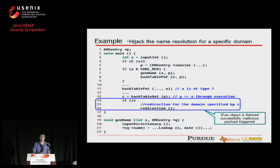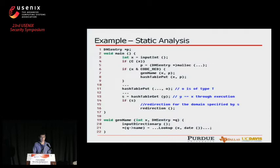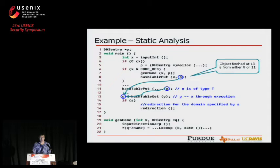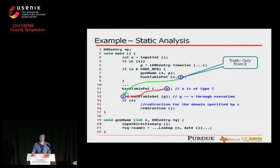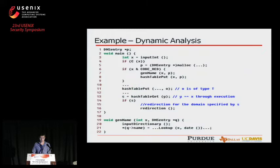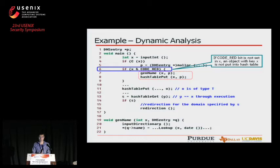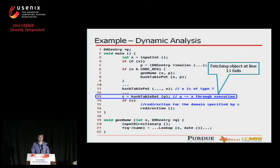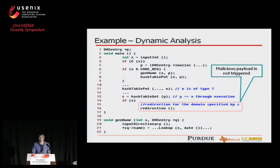The problem for static analysis is that the object fetched at line 13 will be analyzed to be either from line 8 or line 11. However, the truth is it should be only from line 8 because Y is always equal to X through execution, but it is difficult for static analysis to get this truth. For dynamic analysis, it is difficult to provide specific input X whose code red bit is set. If the code red bit is not set, the object with key X is not pushed into the hash table, so the fetching at line 13 will fail and the malicious payload at line 16 will not be triggered.